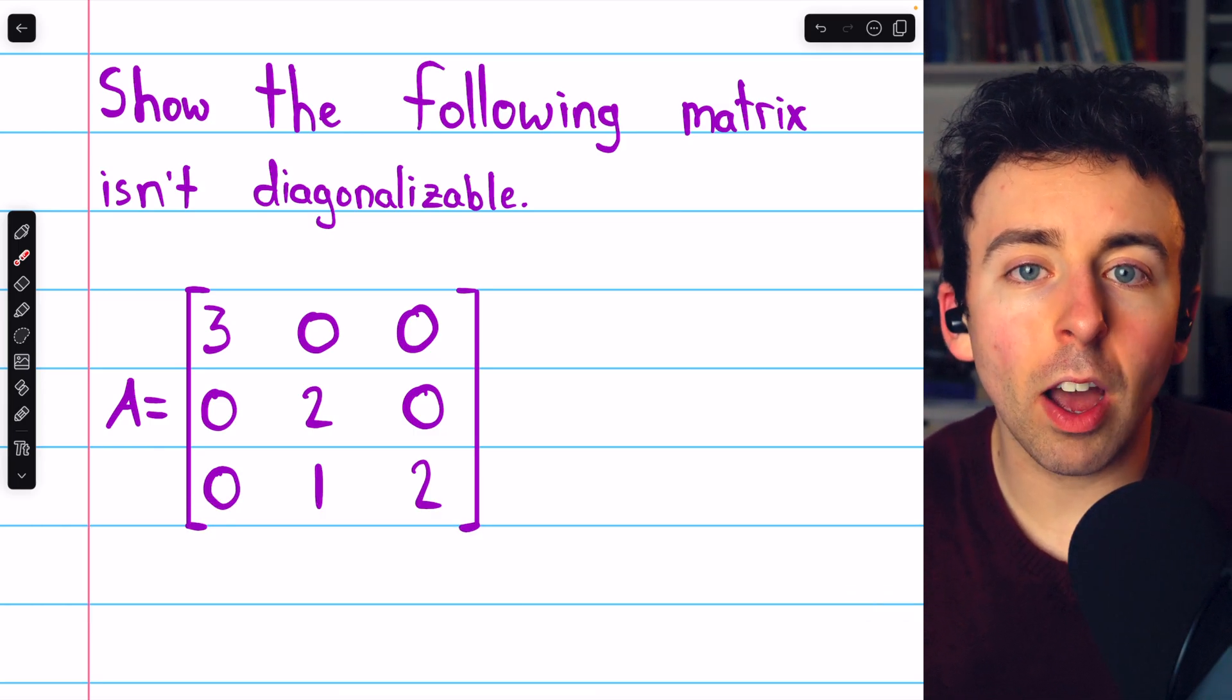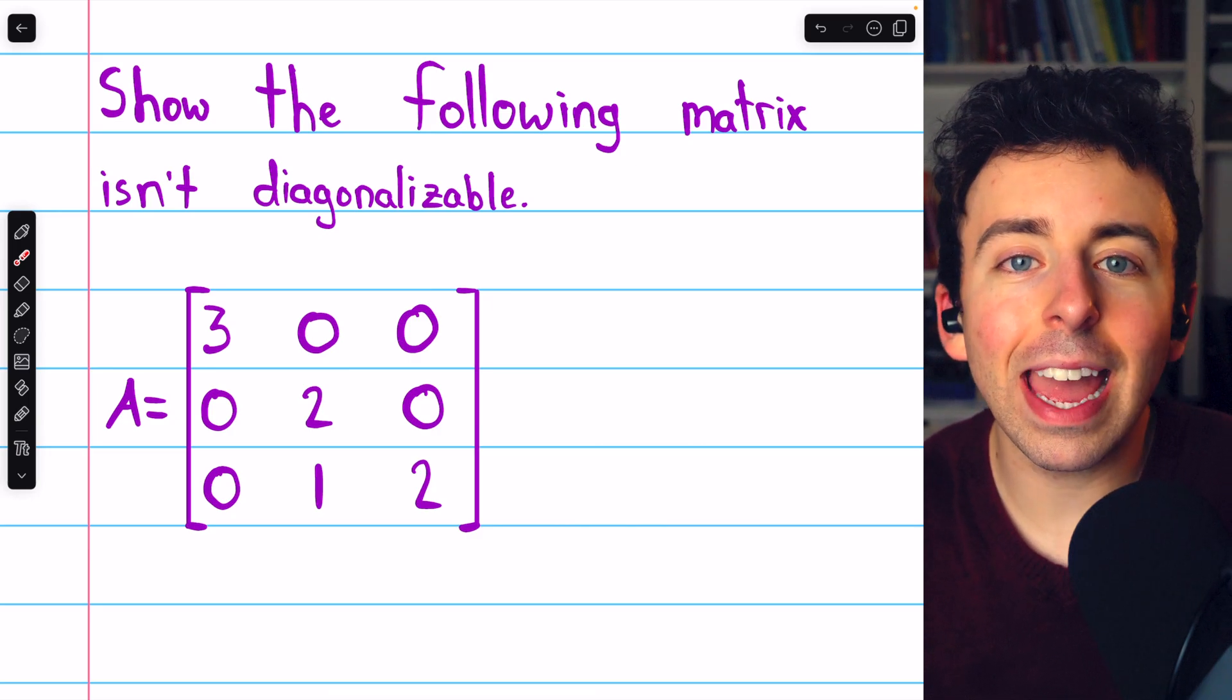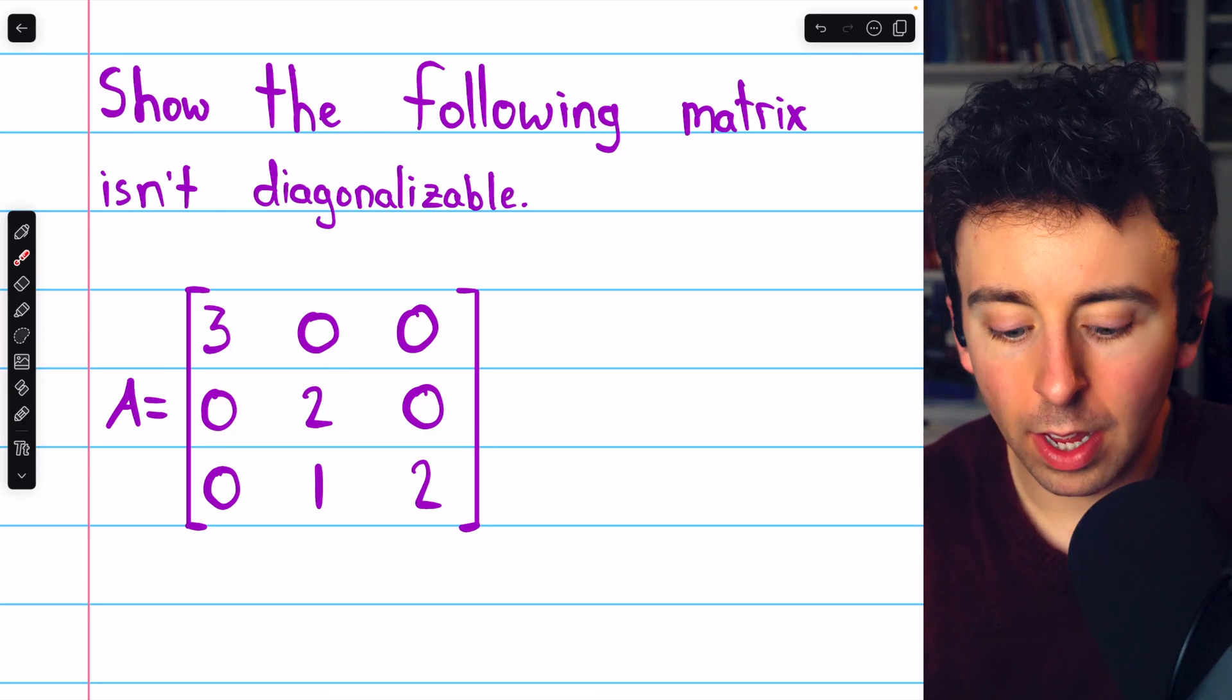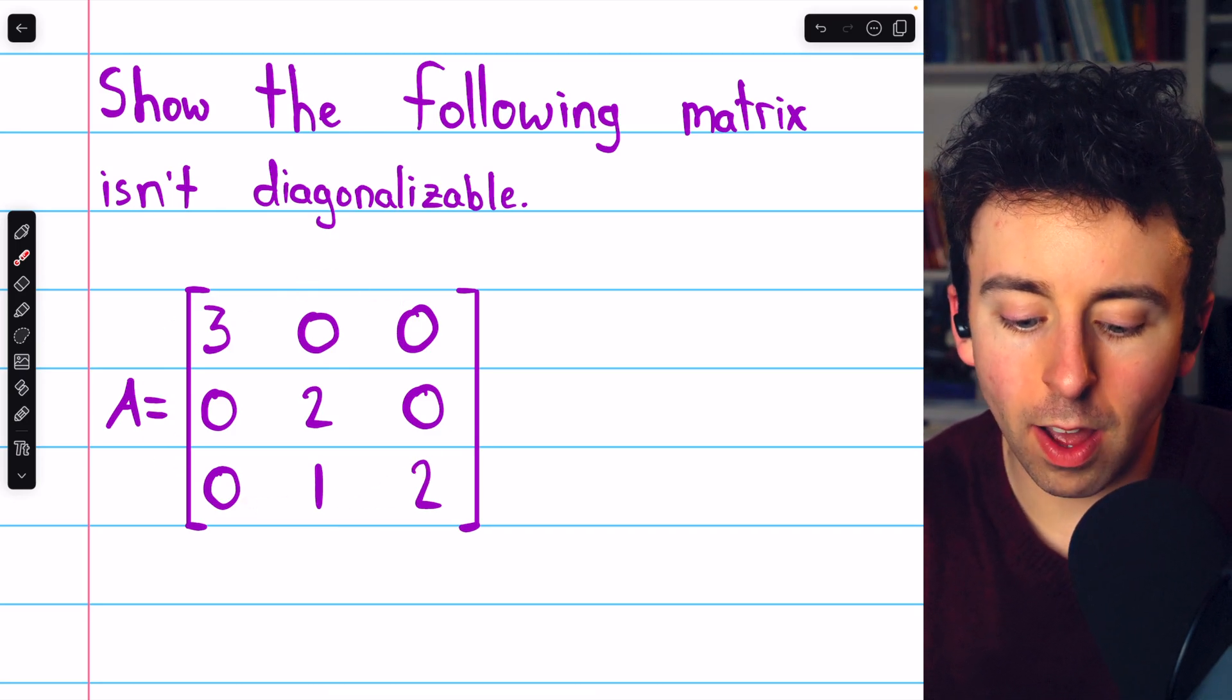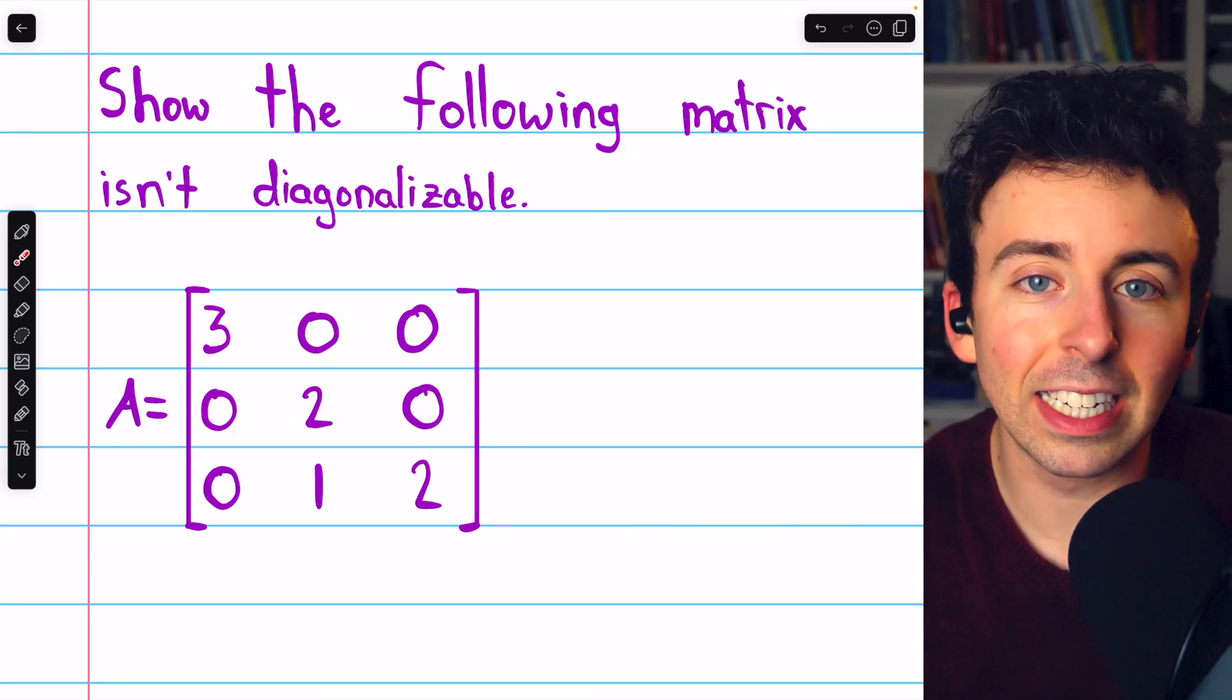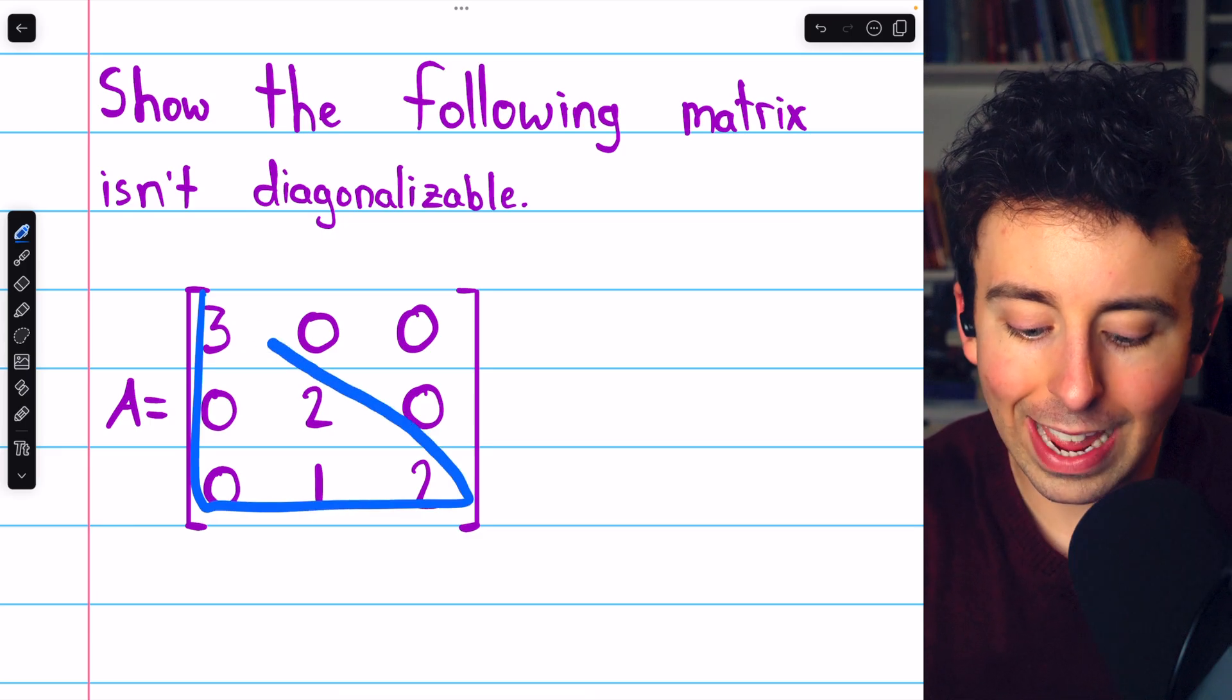In that video, we saw that an nxn matrix is diagonalizable if and only if it has n linearly independent eigenvectors. So to show that this matrix is not diagonalizable, we'll have to show that it doesn't have three linearly independent eigenvectors. Since this is a lower triangular matrix, its eigenvalues are simply its diagonal entries.